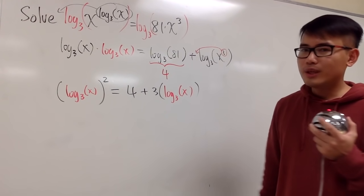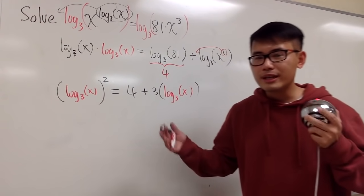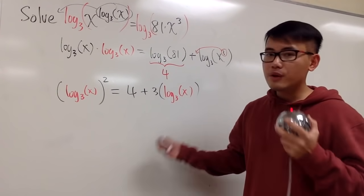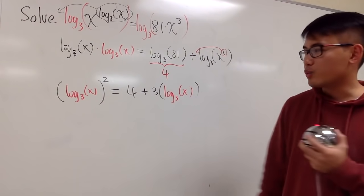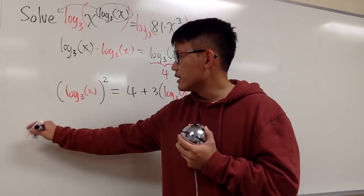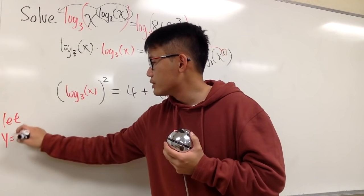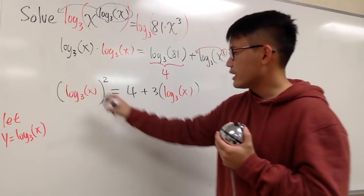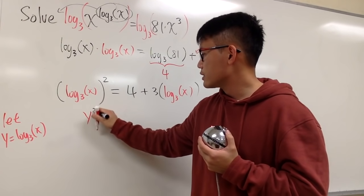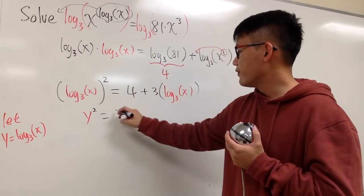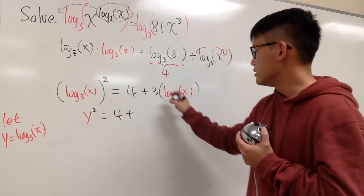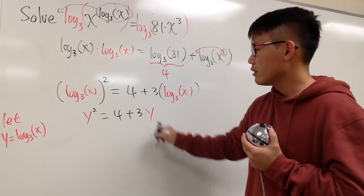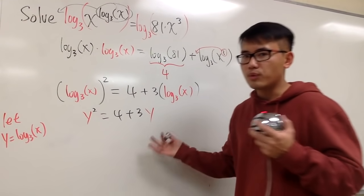You can do it whichever way that you want. A lot of people like to do it with another variable. I will show you guys like that as well. I will say, let y equal to log base 3 of x. Because this way, I can write this down as y squared, and this is equal to 4 plus 3 times y. It's a quadratic equation in terms of y now.